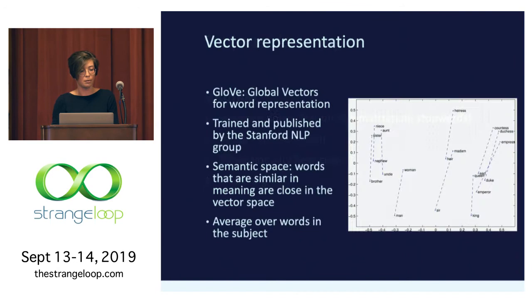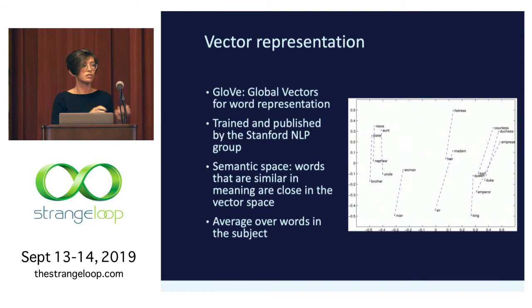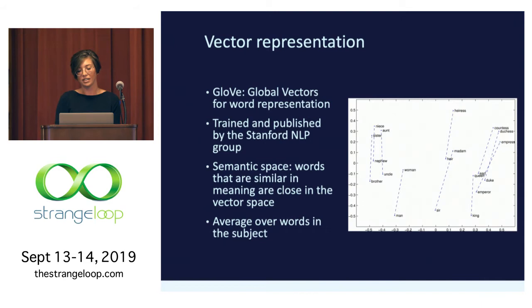For vector representation, we used GloVe — Global Vectors for Word Representation — a word embedding model trained and published by the Stanford NLP group. It creates a semantic space where words similar in meaning are close to each other in the vector space. The famous example: if you take the vector for 'king,' subtract the vector for 'man,' and add the vector for 'woman,' you get the vector for 'queen.' We take each word in our subjects and project it into the GloVe space, then average over the words in the subject to get a single vector representation for it.